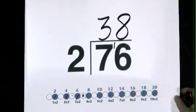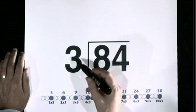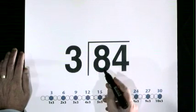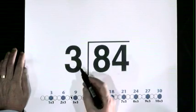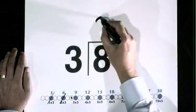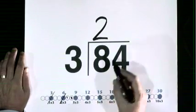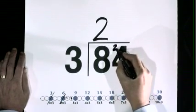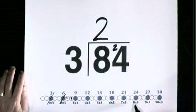84 divided by 3. 8 lives here. 3 goes into 8, 2 times, remainder 2. 3 goes into 24, 8 times.